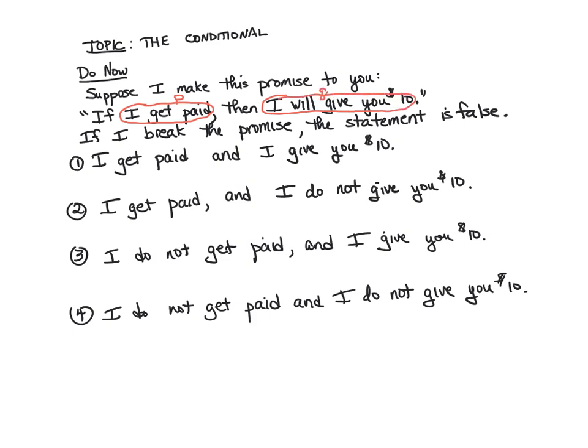Notice that the words connecting P and Q are those words 'if' and 'then.' So for this connective, there's a word in the beginning and a word in the middle. This is called a conditional statement. A conditional statement is always in the form: if P, then Q.